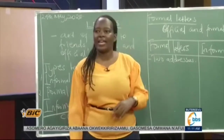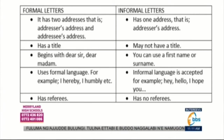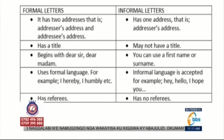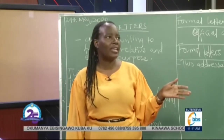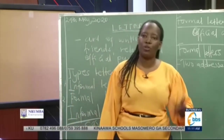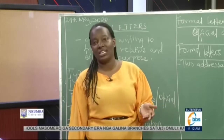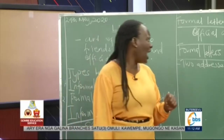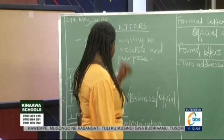With informal letters, these have only one address - and that is the addresser's address, which is the address of the writer, the person addressing. When you are writing in an examination, you are not expected to use the address of your school. You could use any other address. If you were asked to apply for a job during your senior four vacation, do not use your school's address - during vacation you are not in that school. You could come up with any address of your choice, maybe where you stay.